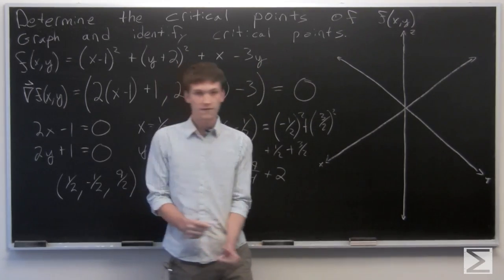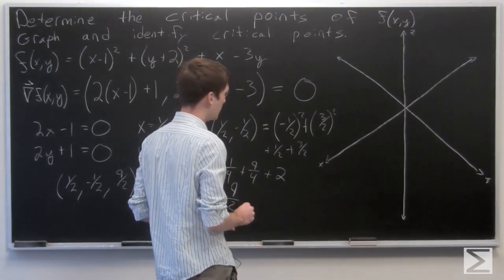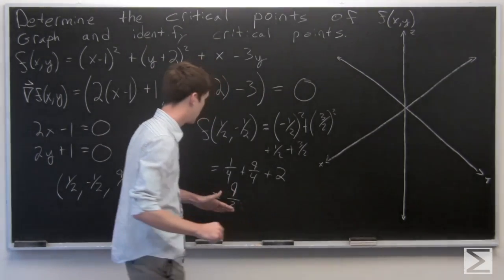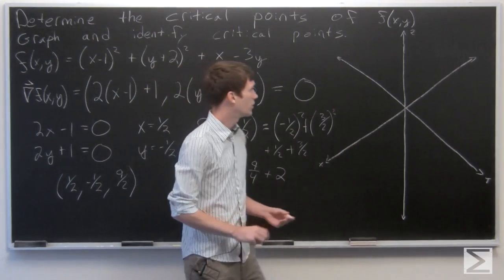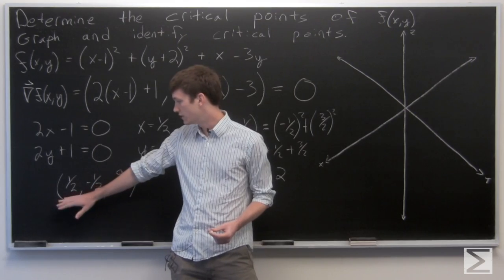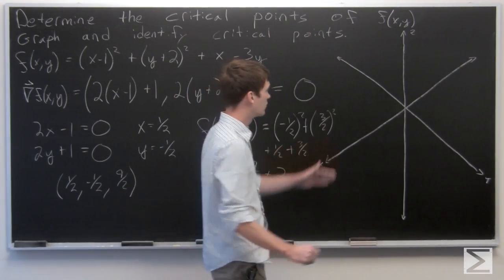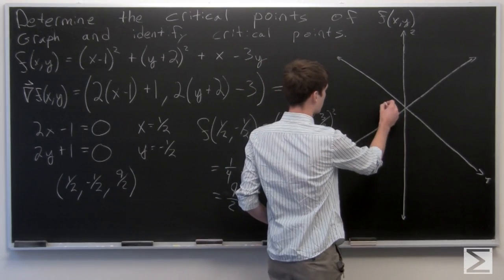So let's go ahead and graph this. It's going to be an elliptic paraboloid. So we know that the minimum, we know that it's going to be a minimum at the point (1/2, -1/2, 9/2). So we can just very roughly estimate...